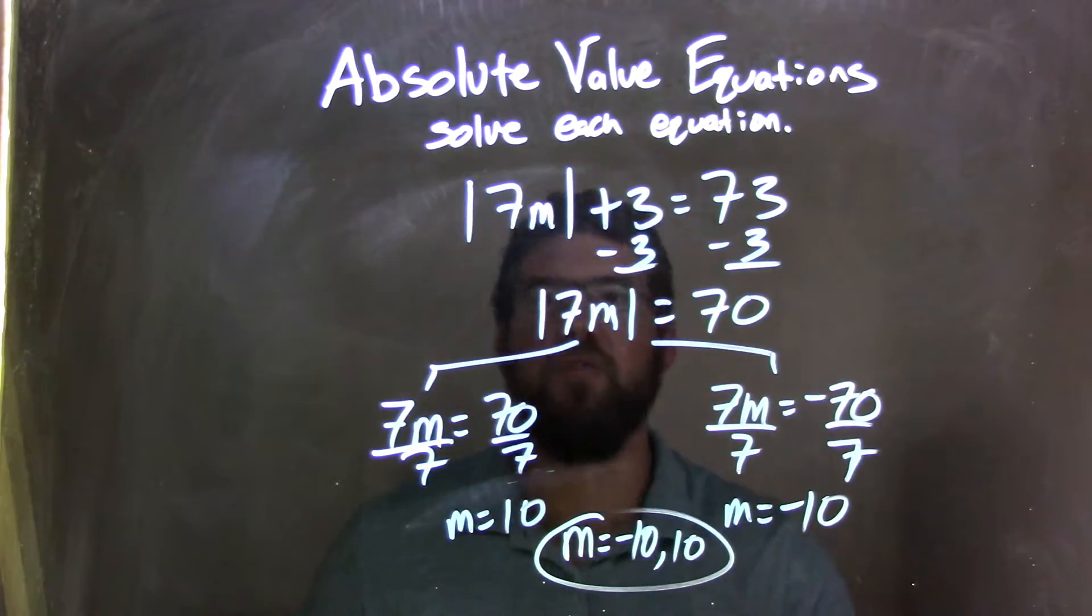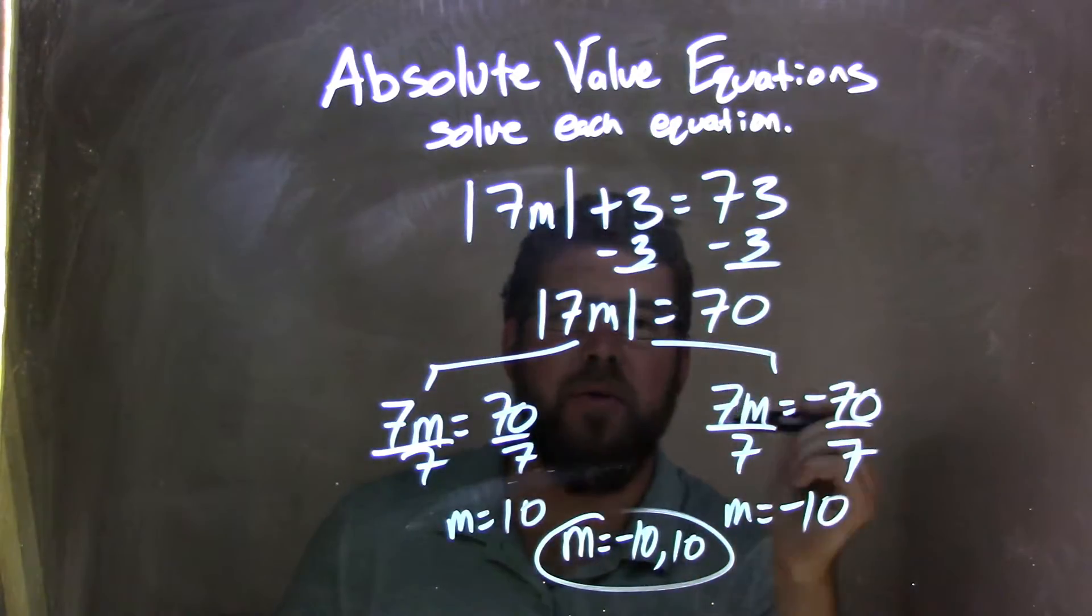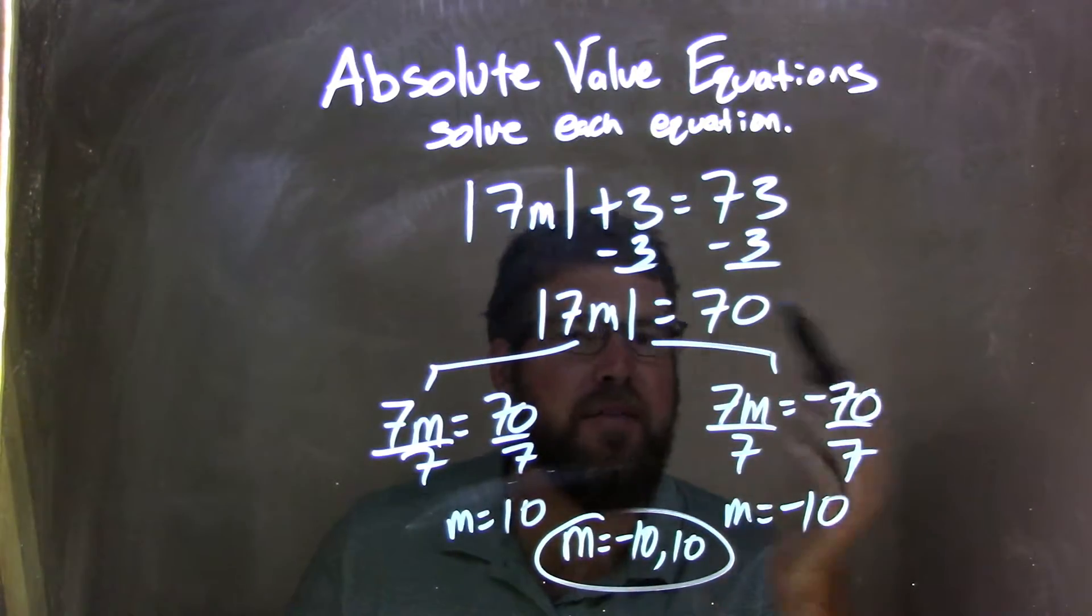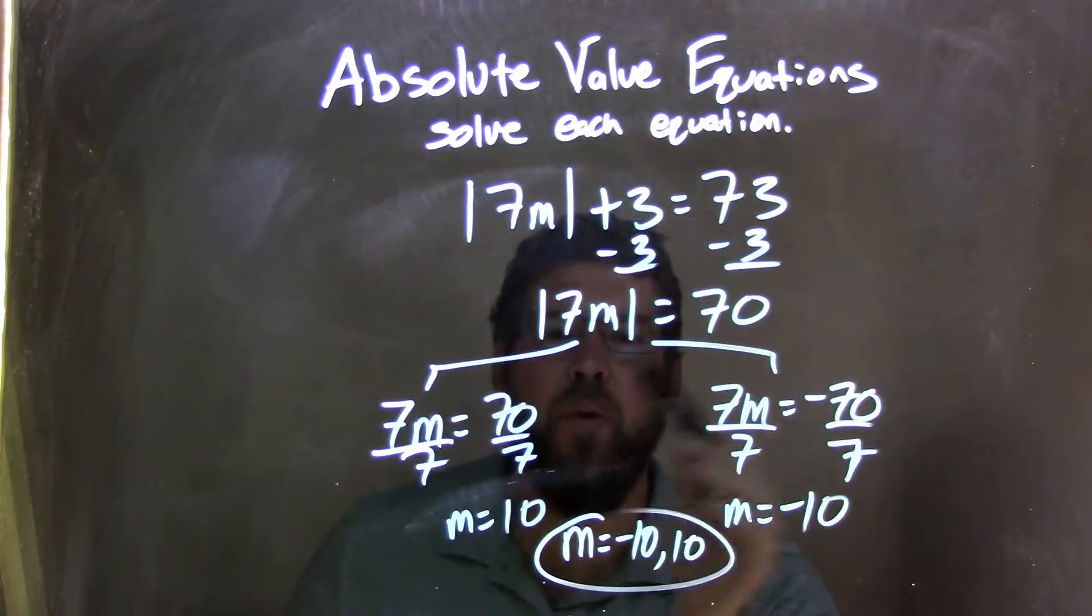So let's recap. We started with the absolute value of 7m plus 3 equals 73. I subtracted 3 from both sides because I needed to isolate the absolute value. I was left with 7m equals positive 70. 73 minus 3 is 70.